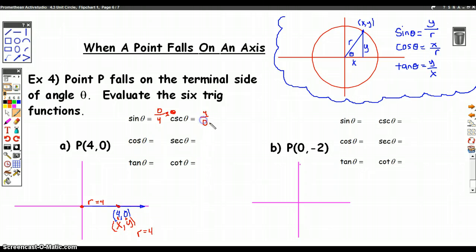Cosine would be my x-coordinate over r, so the x-coordinate is 4 and r is 4, so my cosine is just 4 over 4 which is 1. And secant would just be the reciprocal which is also 4 over 4, also equals 1.